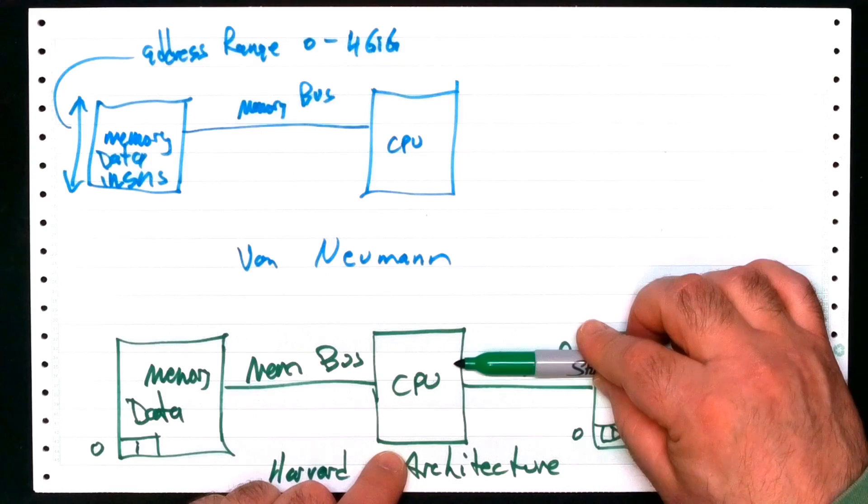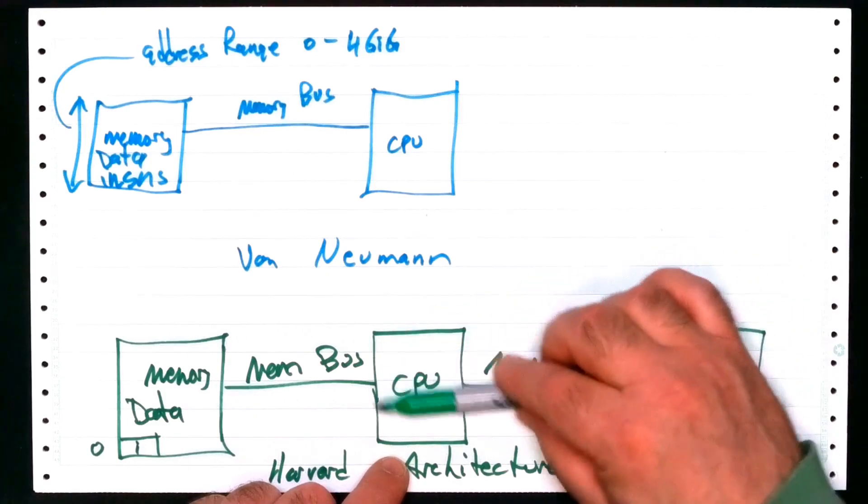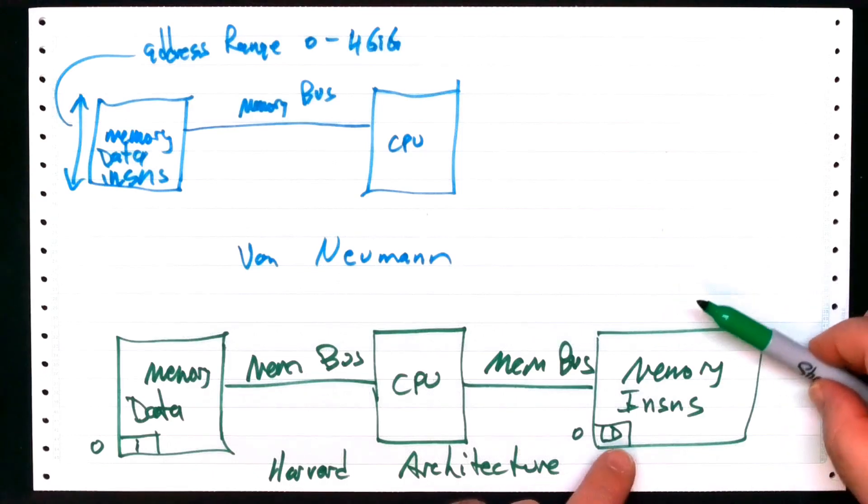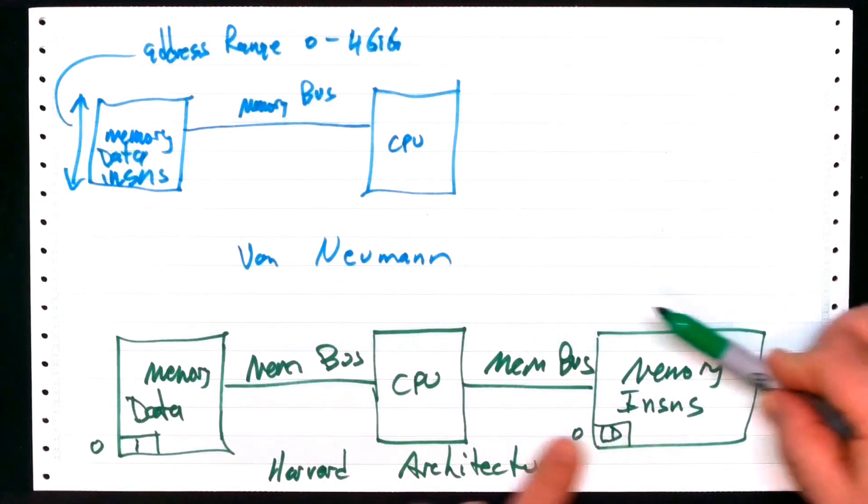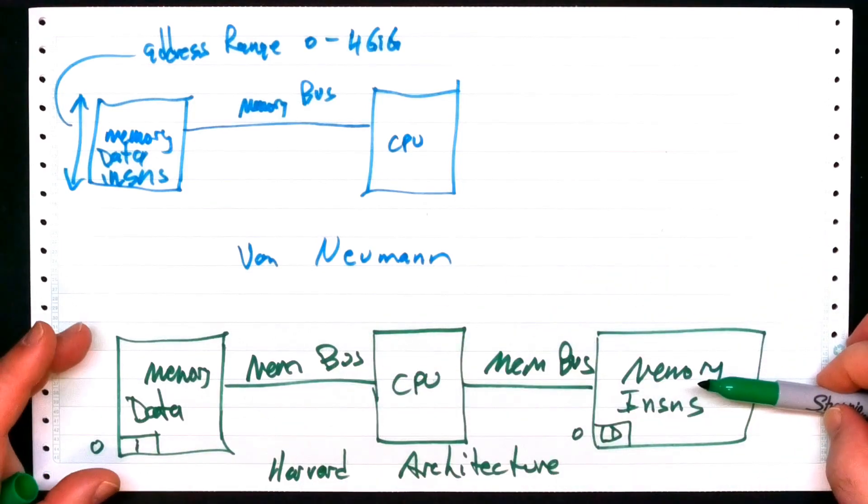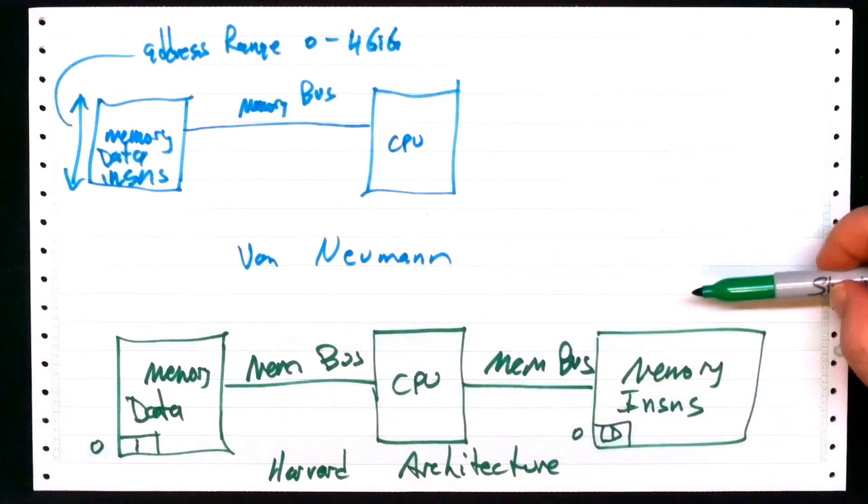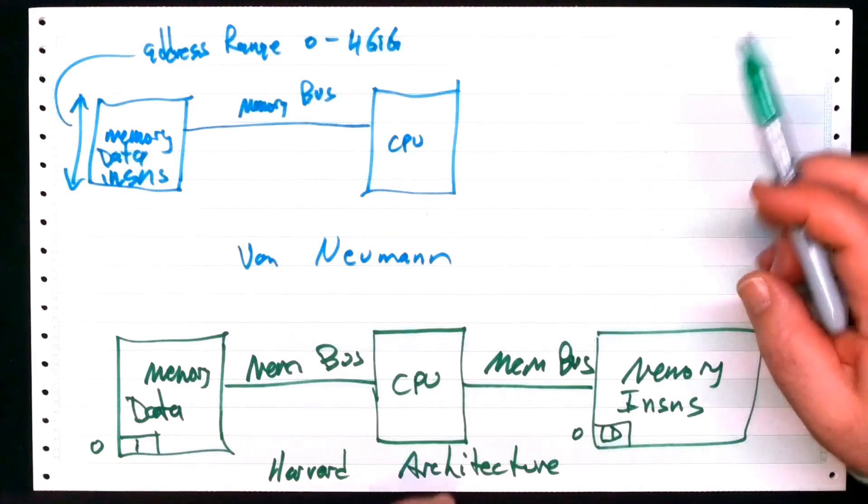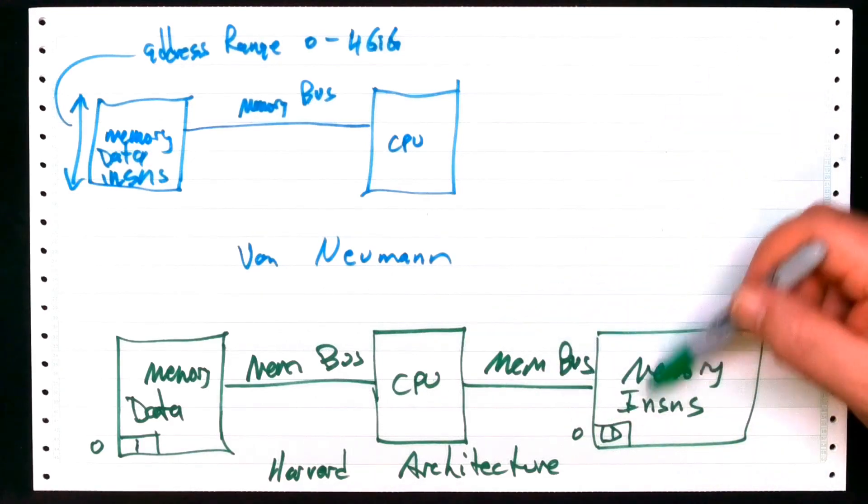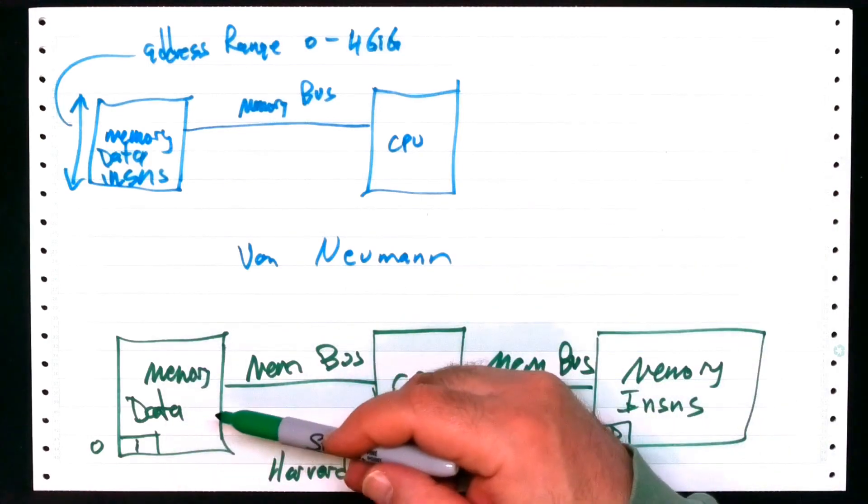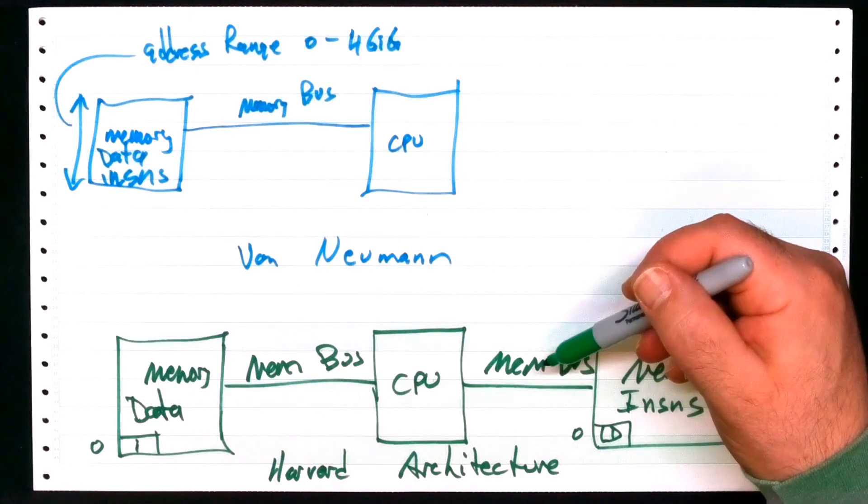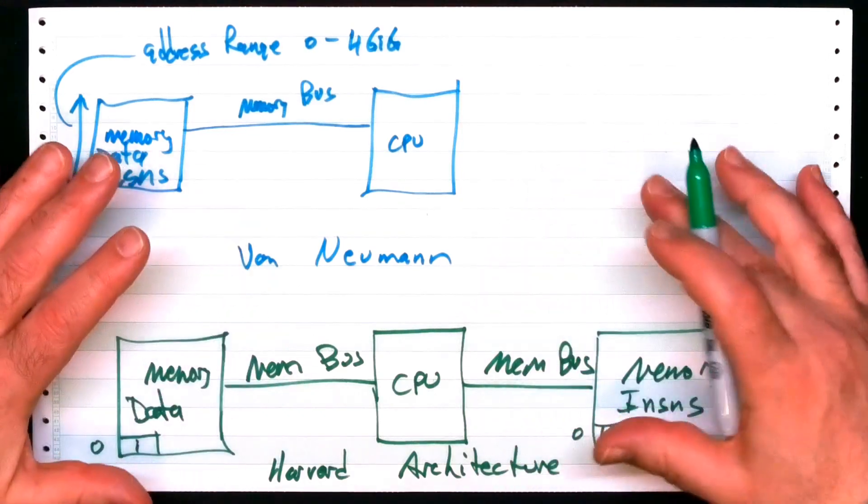The point is the instructions on a Harvard machine differentiate between when they're talking to the instruction memory versus when they're talking to the data memory out of necessity. And a programmer in a machine like this has to keep in mind whether or not they're dealing with addresses that refer to instruction versus the data. This can get complicated and confusing if you're not ready and prepared and used to it.